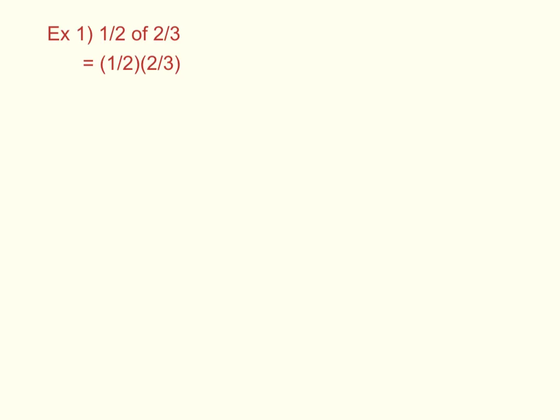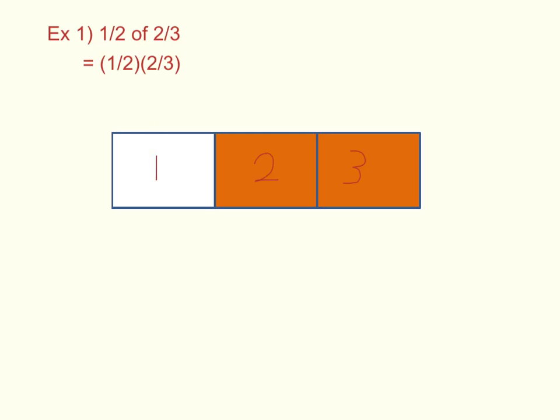Before we begin trying to do this mathematically, let's see if we can explain it visually. Here we have a bar, let's call it a candy bar, and it is broken into thirds. As you can see, 2 thirds of the bar is orange, and 1 third of the bar is white. So we have 2 thirds of a bar being orange.